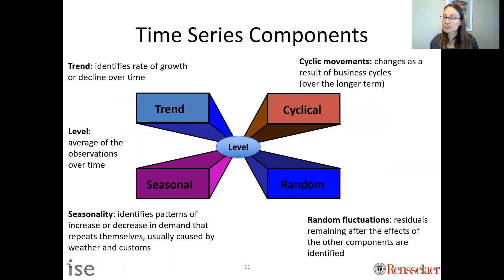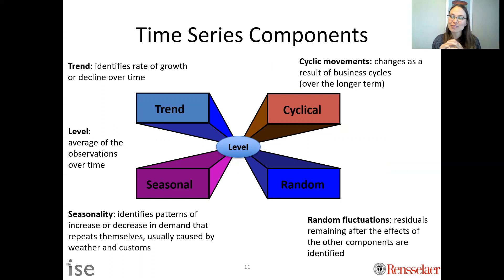In a time series model, we're looking for patterns in historical data that will translate to future data. We call these components. Trend identifies whether the series is going up or down overall. Level is something all data series have — you can always take the average, so there's always a level component. Remember: on your homework, all series have level as a systematic component.